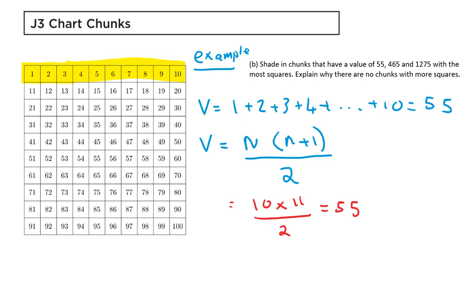Now, the question says the most squares. If I wanted to do 55 with the least squares, I could just shade this. So when we are considering the most squares, we need to consider the squares with the lowest value. And this is this part of the grid, the top part of the grid.